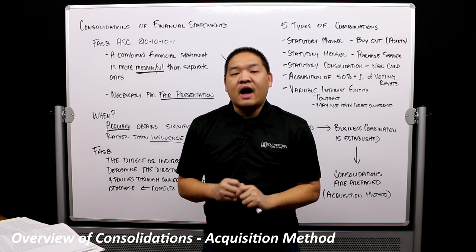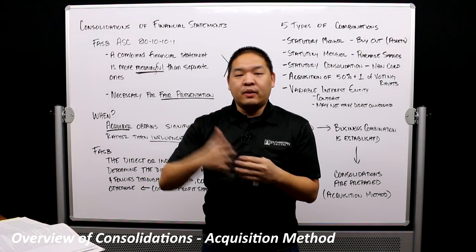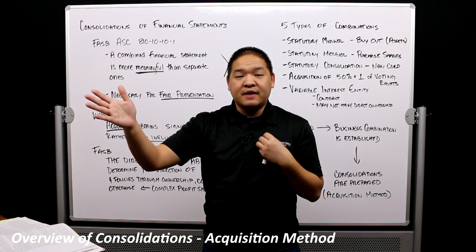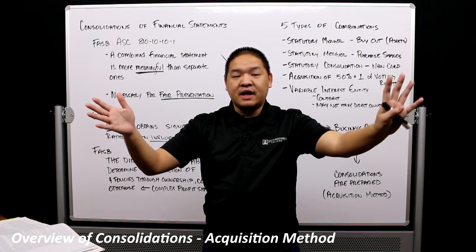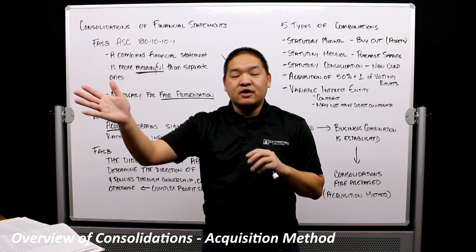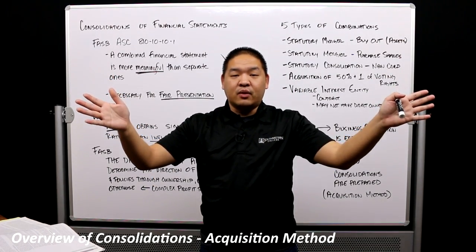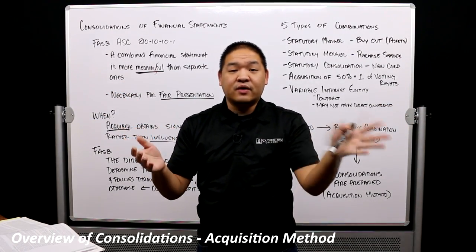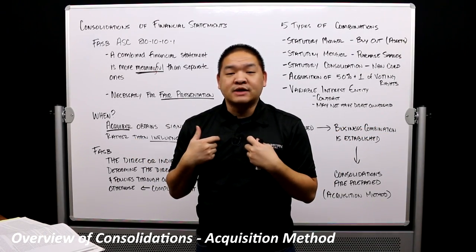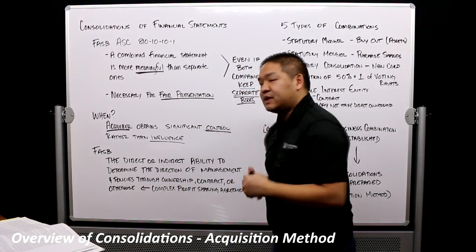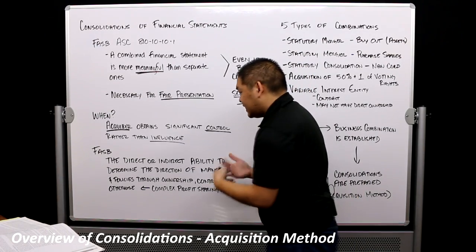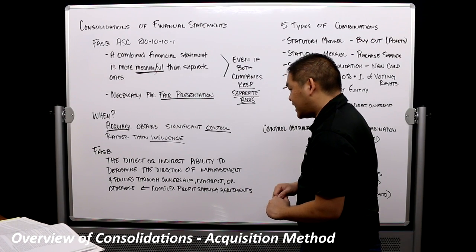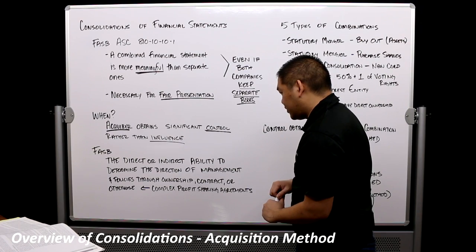Control means that I have 50% plus one, which means if we want to go this way, we can, because I have the majority of the shares — it doesn't matter what anybody else wants to do. If I have 51 shares to their 49, I win. FASB explains control by giving this definition: the direct or indirect ability to determine the direction of management and its policies through ownership, contract, or otherwise.